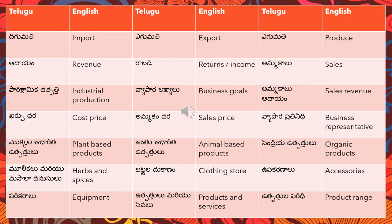Based on the context, the word is used accordingly. 'Ammakalu' means sales and 'ammakam dhara' means sales price. So 'vyaapara prathinithi' means business representative — we translate 'business' as 'vyaapara,' so 'vyaapara prathinithi' is business representative.